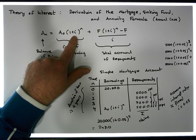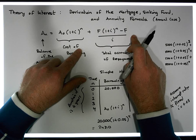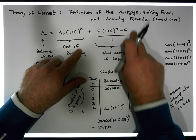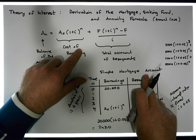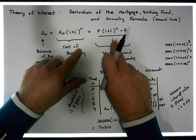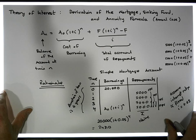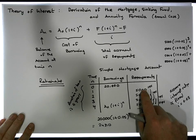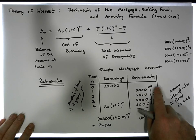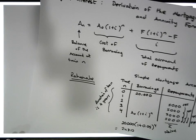Let's look at this side of the formula — the total amount accrued with respect to your repayments — and try to derive this particular amount, keeping in mind the payment schedule. What I'd like to calculate is the summation of all of these payments and the interest that has been accrued based on each payment. Let's now start to generalize.